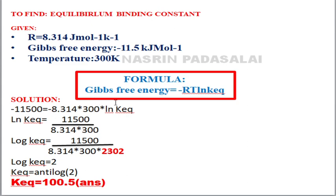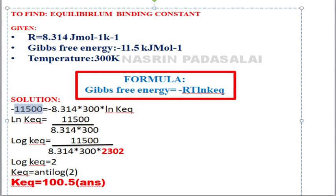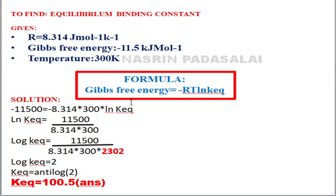Apply all the values. First, make sure R is given in joules. In GATE biotechnology, check that units are consistent. Here R is given in joules, so convert the Gibbs free energy from kilojoules to joules: 11,500 joules per mole. Apply the R value, and don't forget to include the minus sign. T is 300 Kelvin, and ln(K_EQ) is what we need to find.